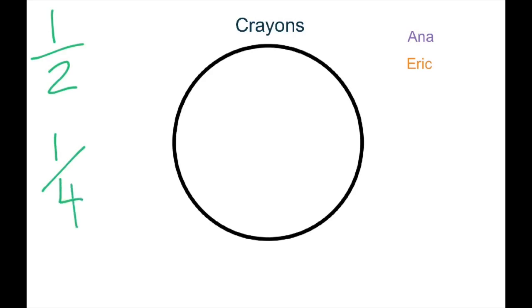Okay, so with this problem right here, we have Anna and Eric, and there are six crayons on the table for them. I'll write that down, six crayons. Three of them are for Anna, and three of them are for Eric. So, we're going to use the circle graph to show what part of the crayons are for Anna, and what part of the crayons are for Eric.